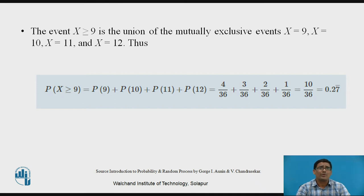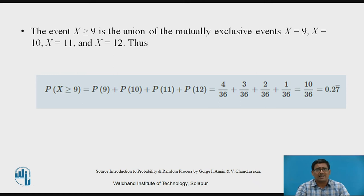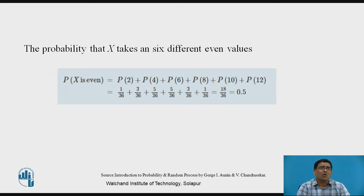For part two, the event X ≥ 9 is the union of the mutually exclusive events X=9, X=10, X=11, and X=12. The maximum outcome is 6+6=12, so we go up to 12. Therefore P(X ≥ 9) = P(9) + P(10) + P(11) + P(12) = 0.27, which satisfies the property of being less than one.